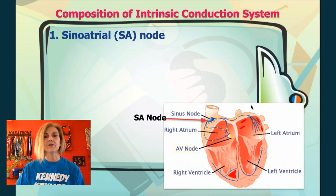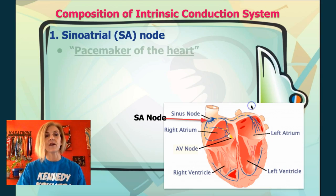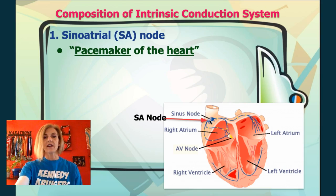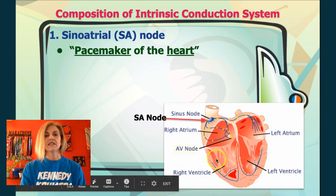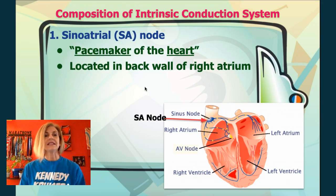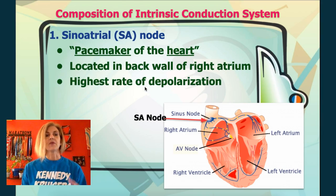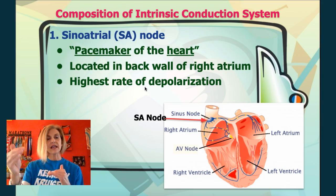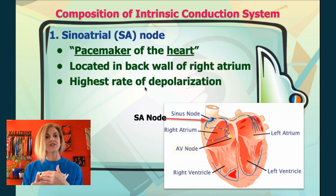The first thing to talk about is the sinoatrial node, also called the sinus node or the pacemaker of the heart. Here it is in the back wall of the right atrium. Remember, the heart is facing you, so this side is the right and this side is the left. This is where the initial impulse begins — the initial depolarization or action potential. Remember, depolarization is a reversal in polarity: sodium rushes in, causing the inside to become positive relative to the outside.